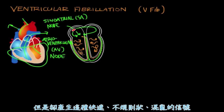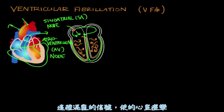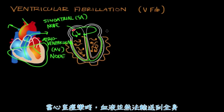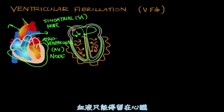Instead, you have rapid, random, and chaotic signaling. This chaotic signaling leads to the ventricular walls spasming. And when the ventricular walls spasm, blood can't be circulated through the body — it just stays here in the heart.